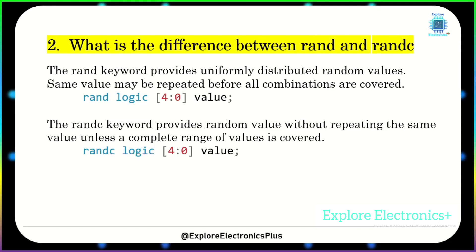What is the difference between rand and randc? The rand keyword provides uniformly distributed random values, and the same value may be repeated before all combinations are covered. The randc keyword provides random values without repeating the same value unless the complete range of values is covered.